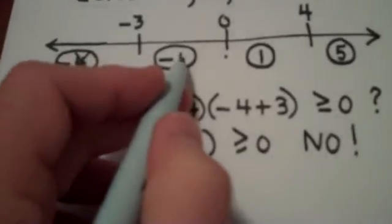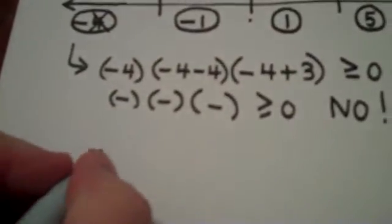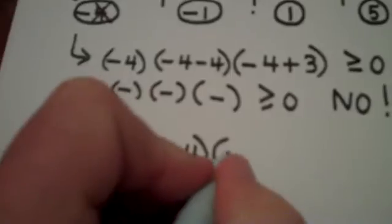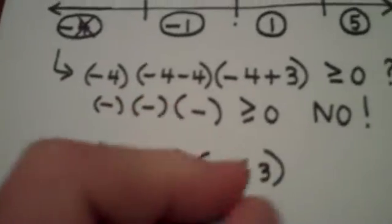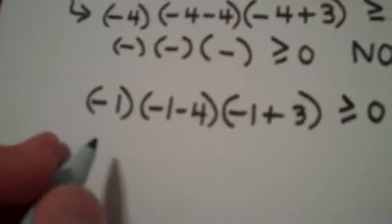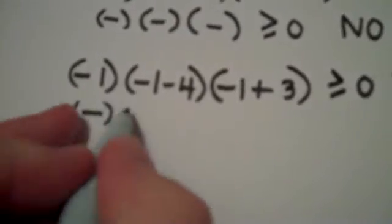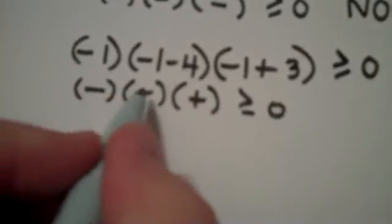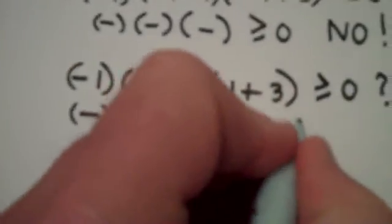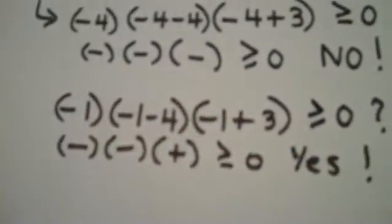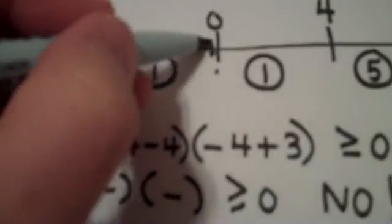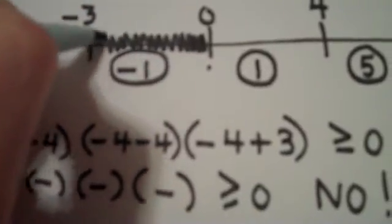Now we try the negative one. When I do, I have negative one times negative one minus four times negative one plus three and that's supposed to be greater than or equal to zero. Well, let's look at signs. A negative times a negative. This would be a positive. Is a negative times a negative times a positive greater than or equal to zero? Yes. So that means that negative one was a solution. Therefore, everything in its region is going to be a solution.